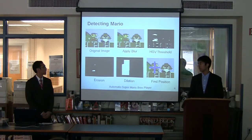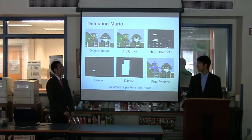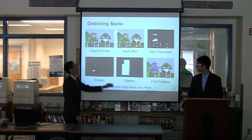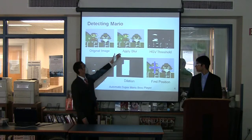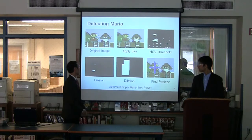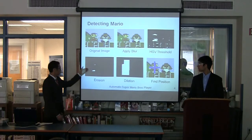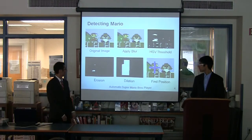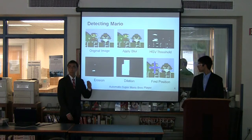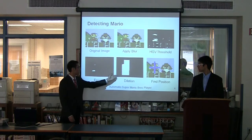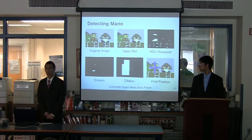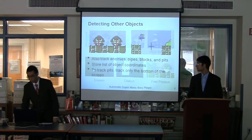We then used erosion to get rid of the excess white pixels that are in the HSV threshold, because as you can see, they're not part of Mario. We get rid of the excess white pixels and then recombine the object using dilation, and then find the center of the object in order to find the coordinates of Mario.